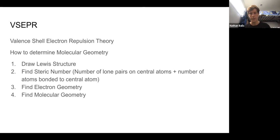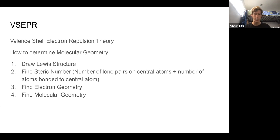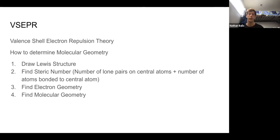We're going to get to some examples later, so don't stress about it. Once you find the steric number, you can find the electron geometry depending on the number of lone pairs and bonded atoms. And then from the electron geometry, we're going to find the molecular geometry, which is a little more specific.